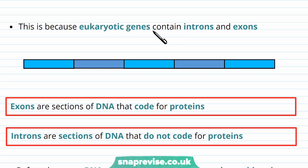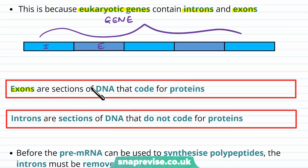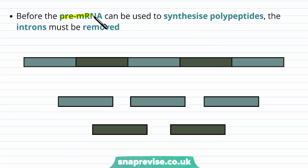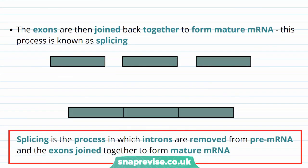The reason for this is that eukaryotic genes are more complicated — they contain introns and exons, which are regions of DNA. Exons are sections of DNA that code for proteins — these are the parts that help make the protein. Introns are sections of DNA that don't code for proteins; they have various regulatory roles but don't control what the protein is made of. Before the pre-mRNA can be used to make proteins, the introns must be cut out so that only the exons remain. The RNA is cut to remove the introns, leaving the exons which code for the protein. The exons are then joined together again to form a mature mRNA, and this whole process is known as splicing.